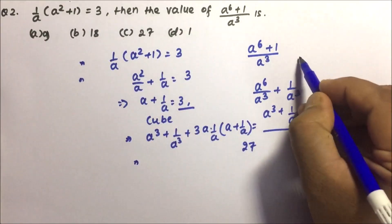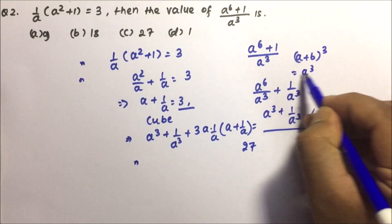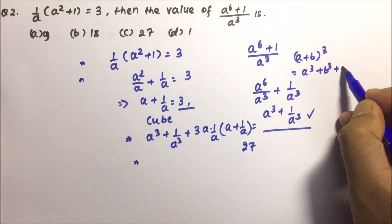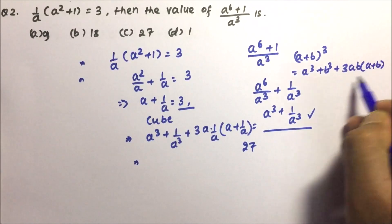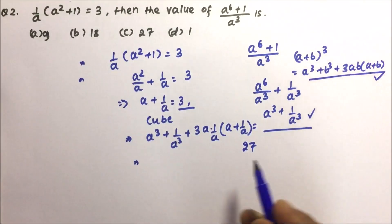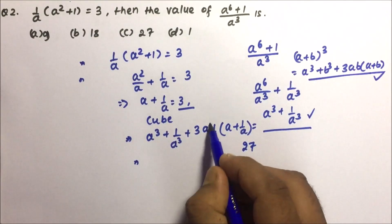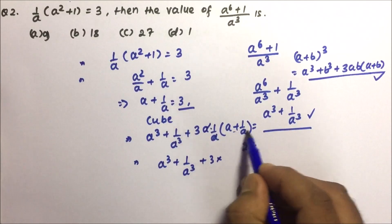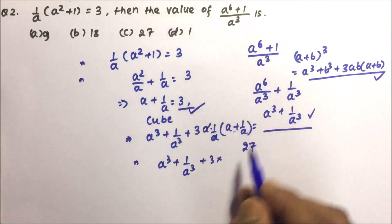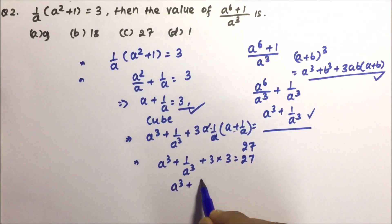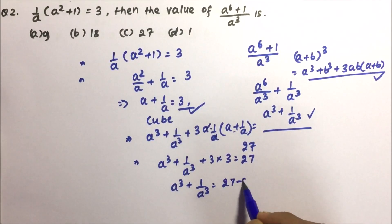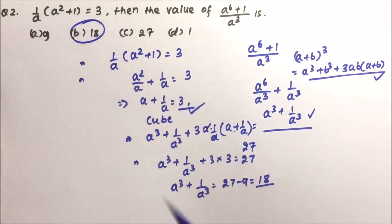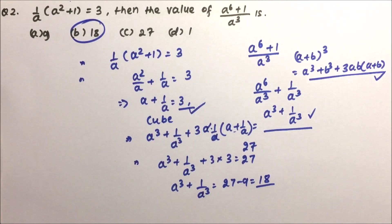The formula is (a plus b)³ equals a cube plus b cube plus 3ab into (a plus b). The a terms cancel in 3ab, so a cube plus 1 by a cube plus 3 times 1 times (a plus 1 by a) equals 27. Since a plus 1 by a is 3, we get a cube plus 1 by a cube plus 9 equals 27, so a cube plus 1 by a cube equals 18. Option B is the correct answer.